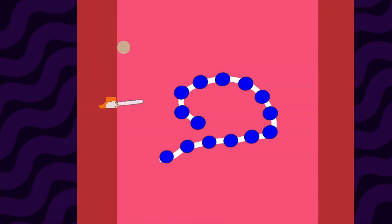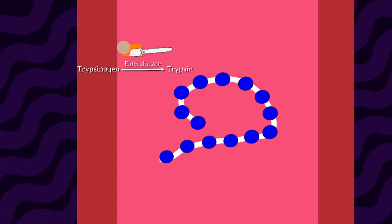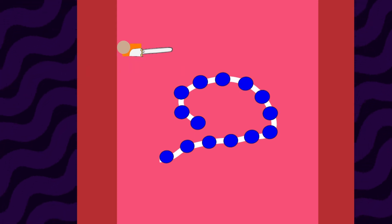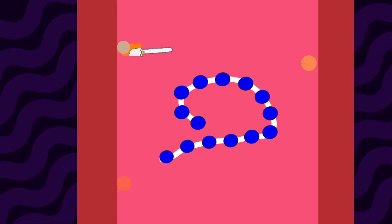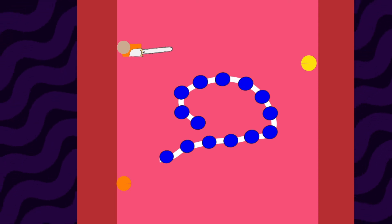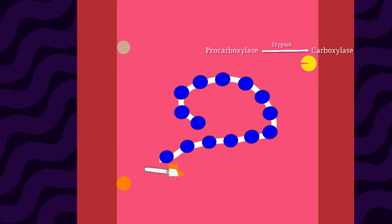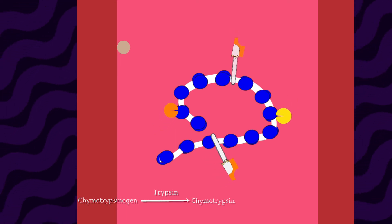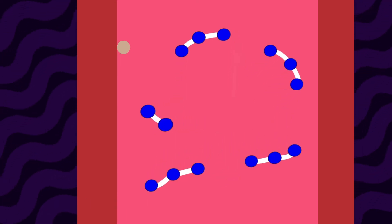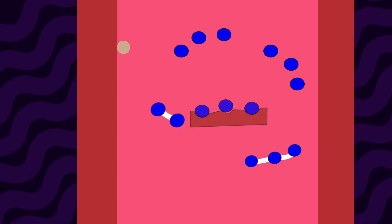As soon as the food enters the intestine, it encounters an alkaline medium and pancreatic enzymes. These include trypsinogen, which is activated by enterokinase present on the mucosa of the small intestine into trypsin. Trypsin has similar functions to pepsin and breaks down protein molecules further. We also have chymotrypsinogen and procarboxypeptidase, which are activated by trypsin into chymotrypsin and carboxypeptidase. All of these together break down protein further.